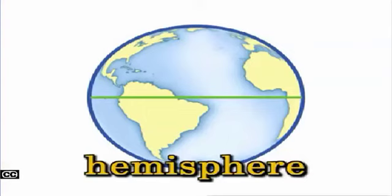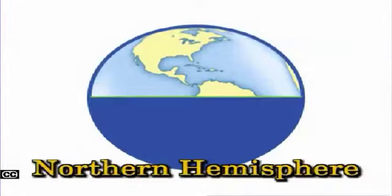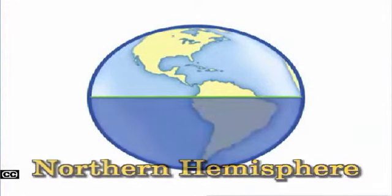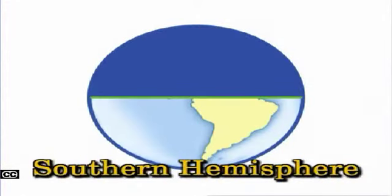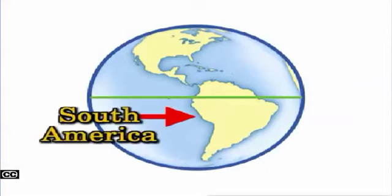A hemisphere is one half of Earth. The equator divides Earth into two hemispheres: the northern hemisphere and the southern hemisphere. North America is in the northern hemisphere. South America is mostly in the southern hemisphere.